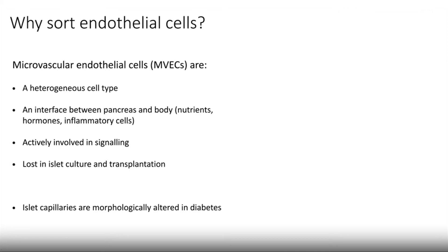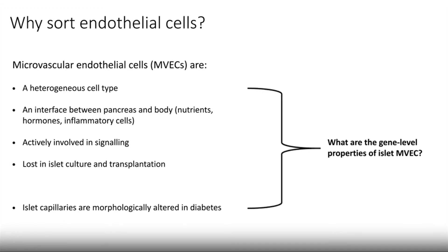When it comes to the pancreas, endothelial cells constitute an interface between the organ and the rest of the body, meaning they may be implicated in physiology and disease through interactions with nutrients, hormones, and inflammatory cells. They have also been shown to be able to actively signal with the islet cells, and are known to be lost in islet culture and transplantation. However, they are known to be morphologically altered in both type 1 and type 2 diabetes. Thus, we decided to investigate the gene-level properties of islet microvascular endothelial cells.